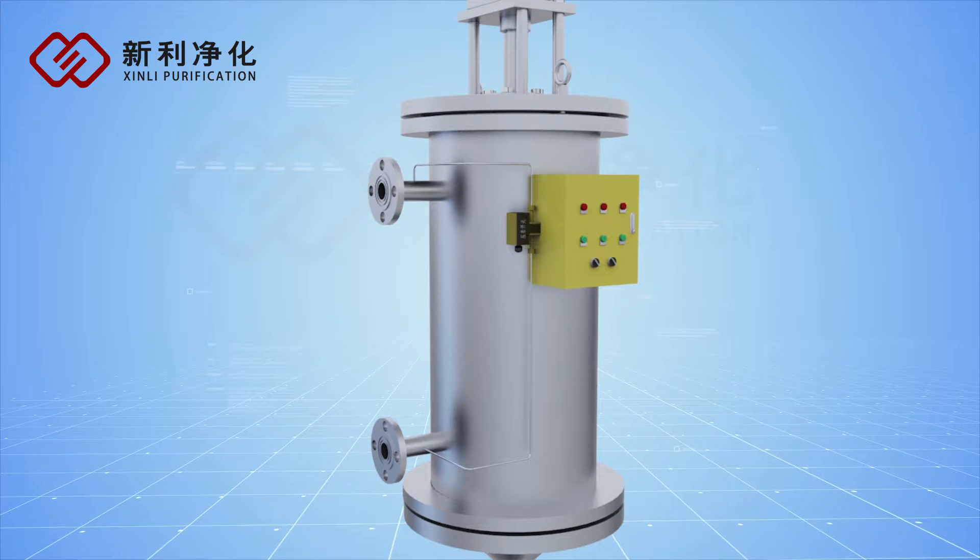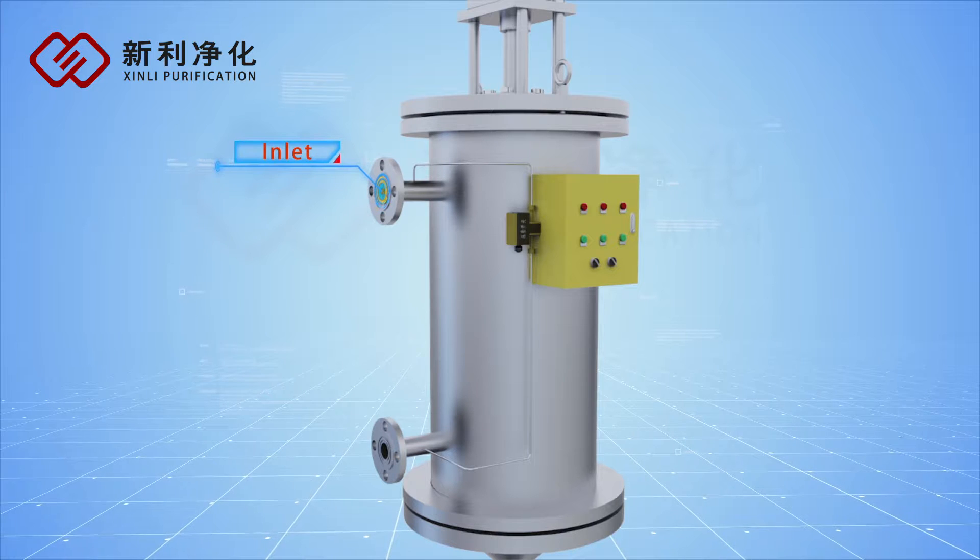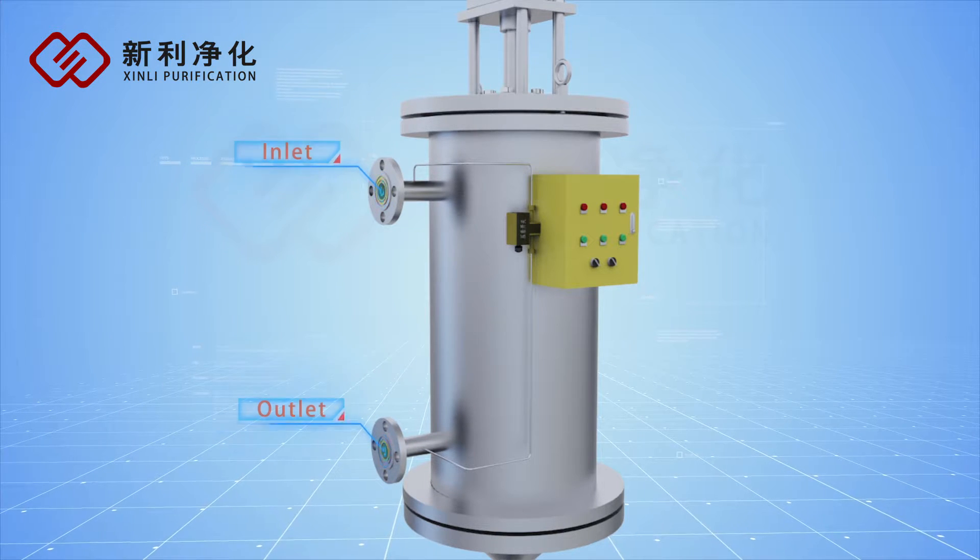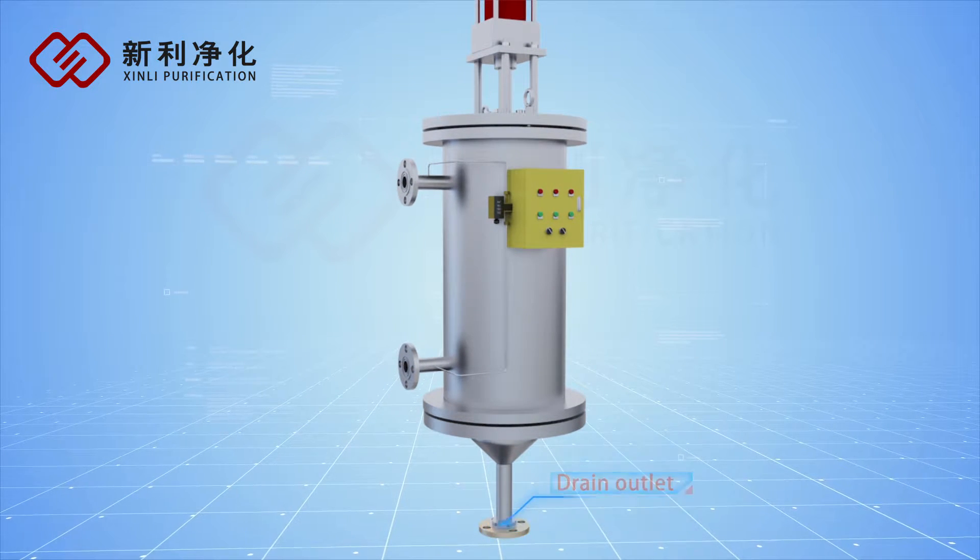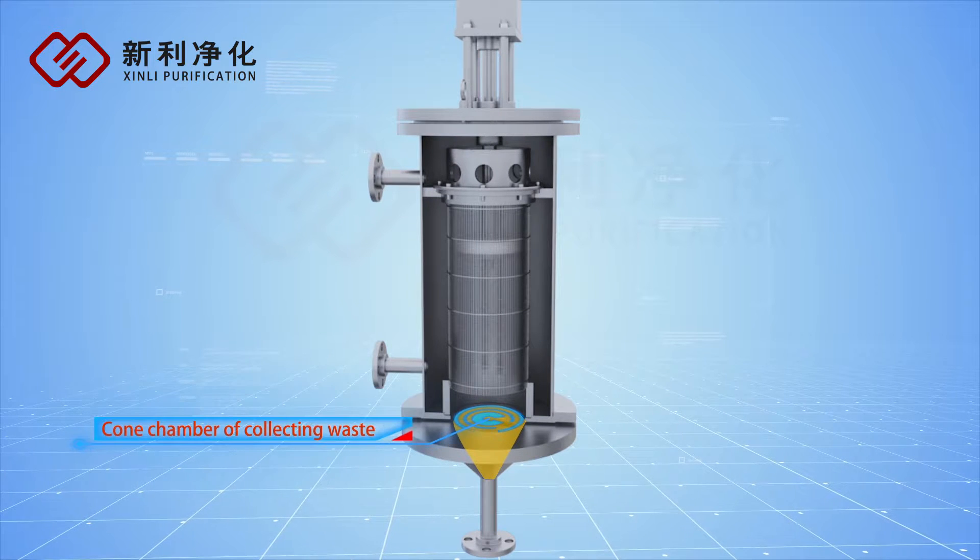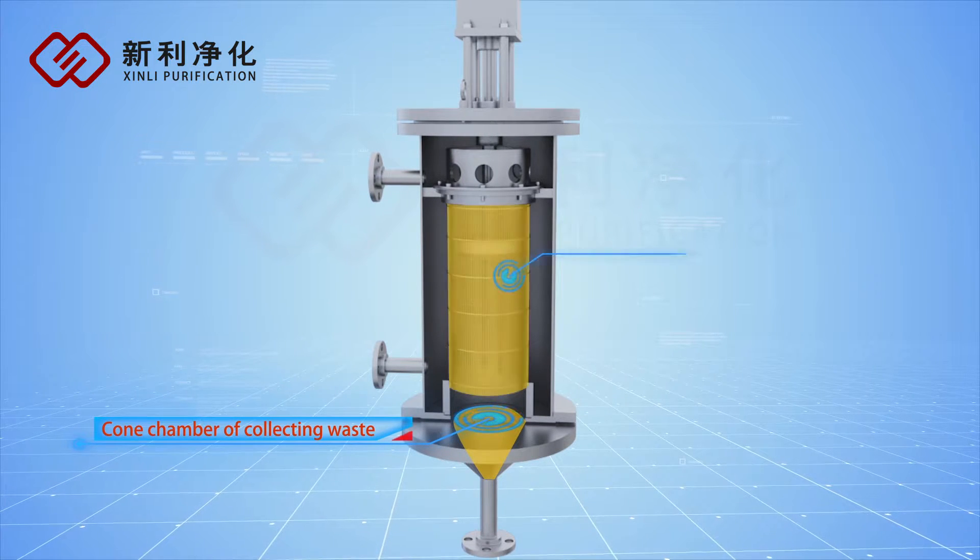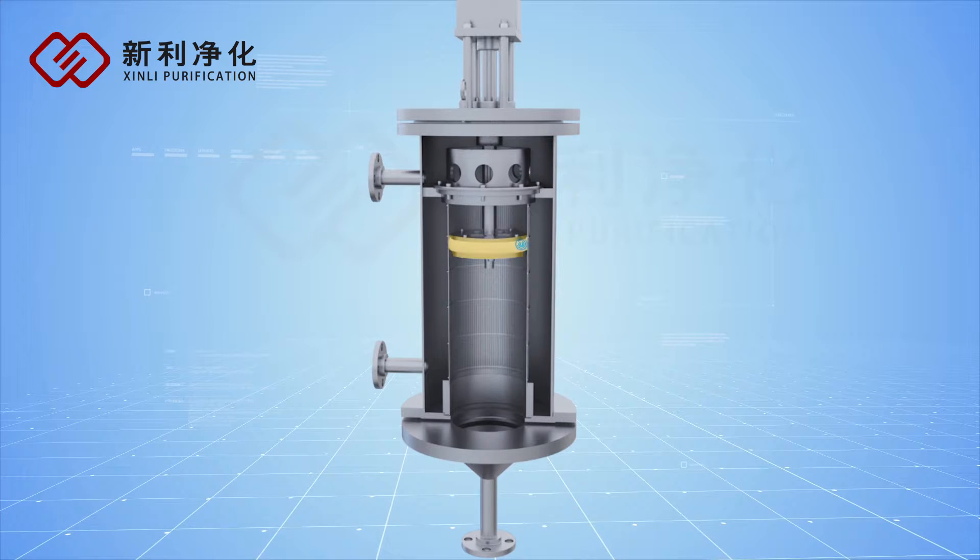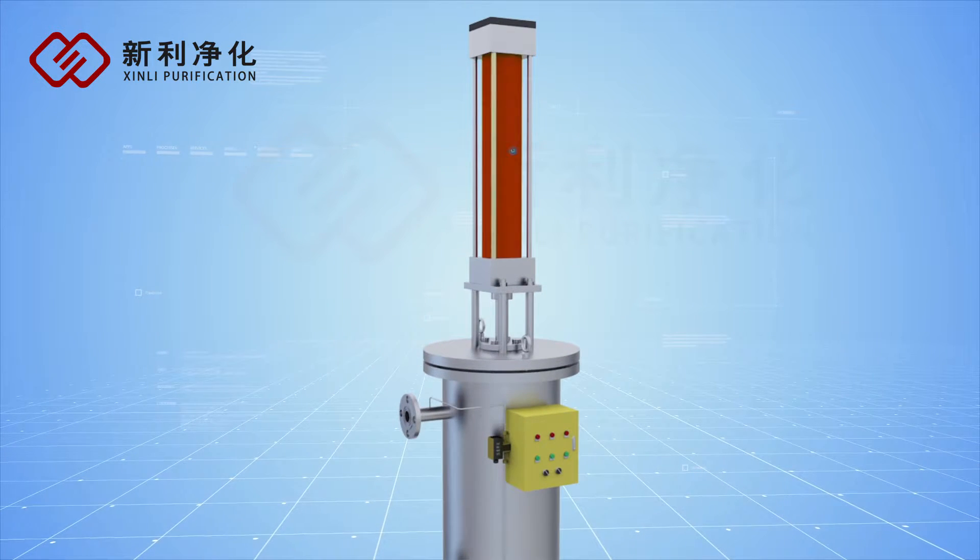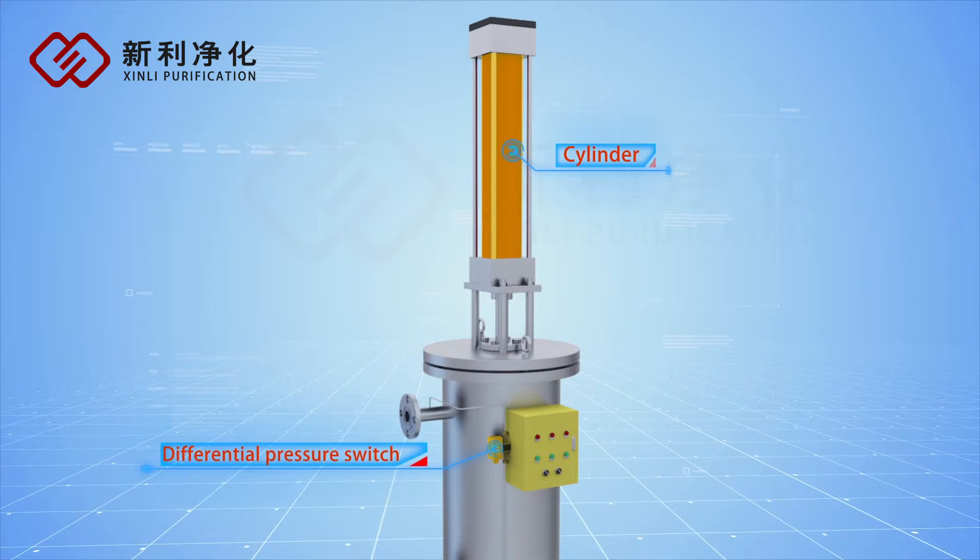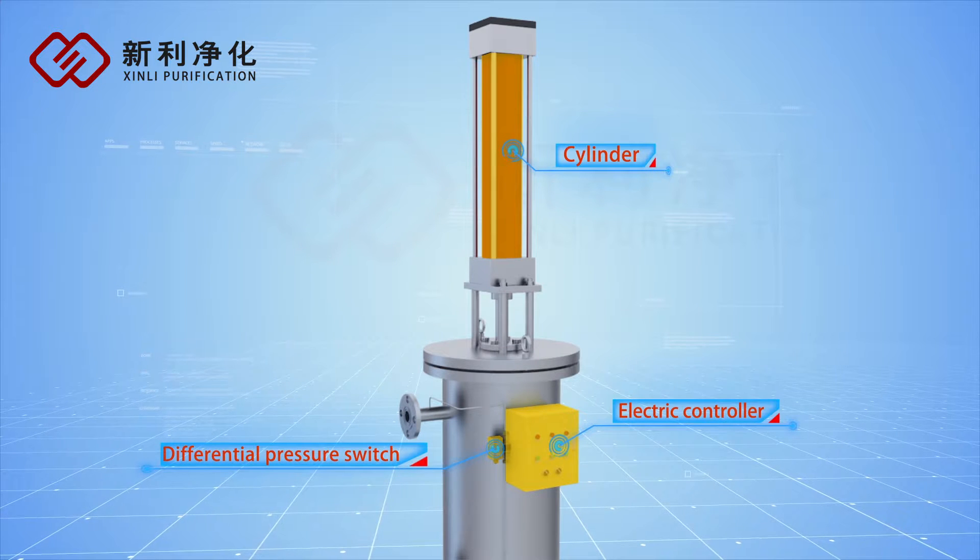The XLGF Series Scrapper Self-Cleaning Filter consists of an inlet, outlet, drain outlet, core and chamber of collecting waste, filter cartridge, scraper, cylinder, differential pressure switch, and electric controller.